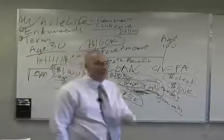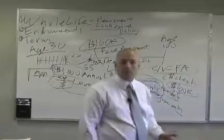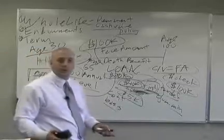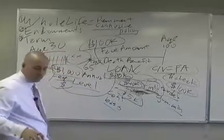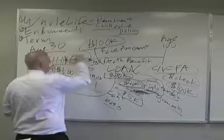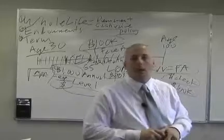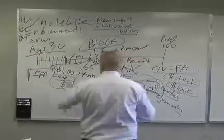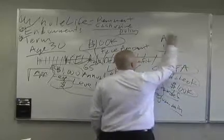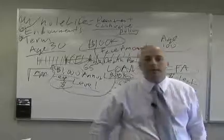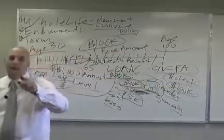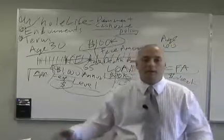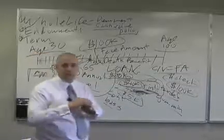So those are my two options: cancel the policy and get the cash value, or take a loan against my cash value. If I cancel and then die, the beneficiary gets nothing — the policy is over. Let's say I do neither and keep paying my premium. This is continuous premium, meaning at age 95 I still pay $1,000 a year. Then I hit age 100 — I have my centennial celebration — and you hand me a birthday card from the insurance company.